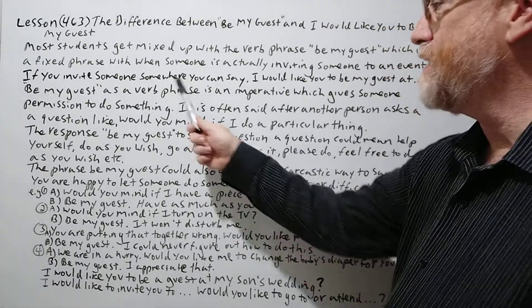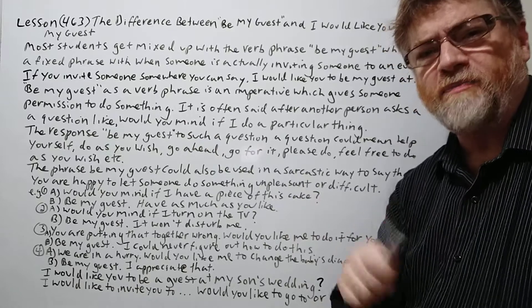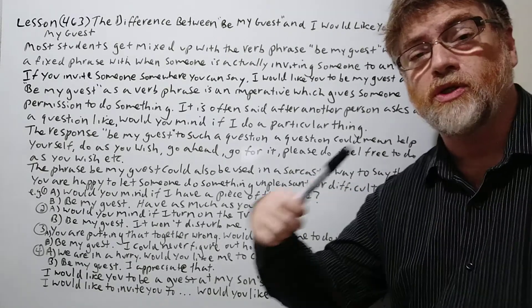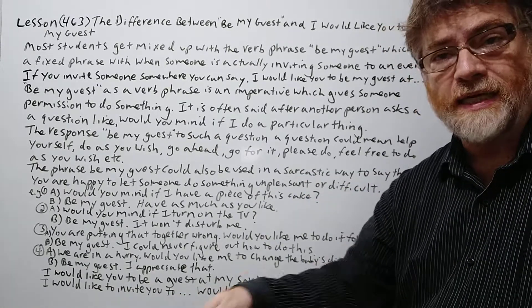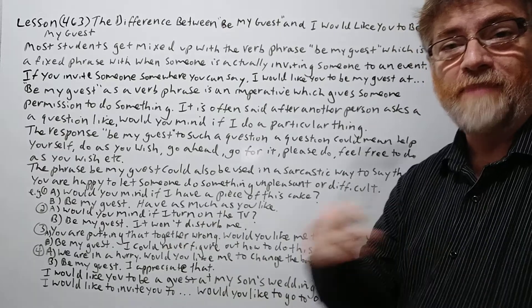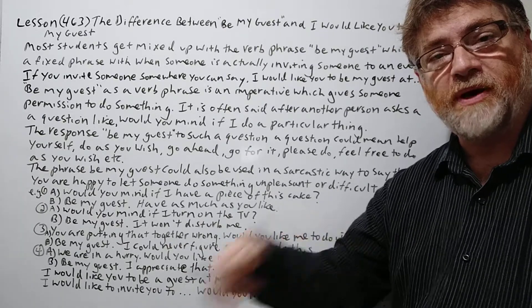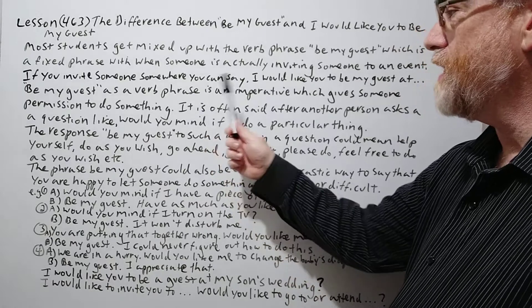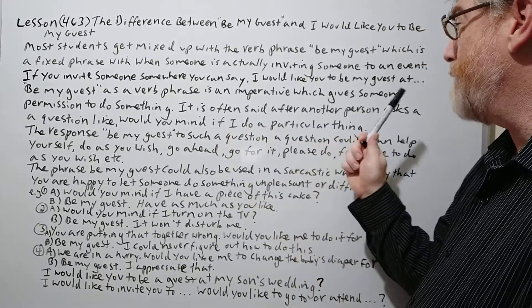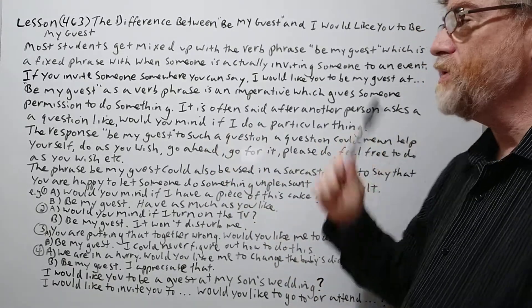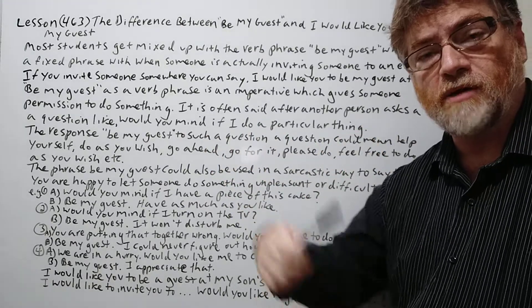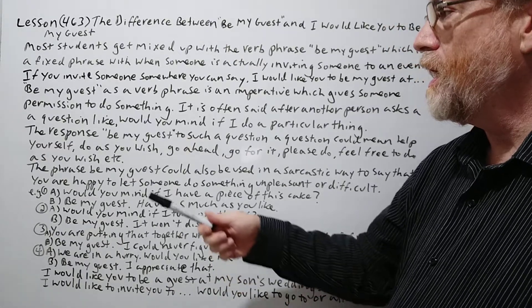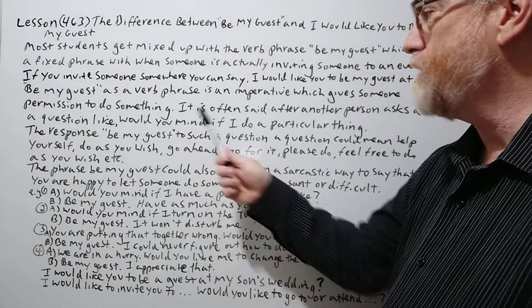'Be my guest' as a verb phrase is an imperative. An imperative is kind of like an order — like when you tell somebody 'just do it,' 'eat it,' 'buy it.' So 'be my guest' as a verb phrase is an imperative which gives someone permission — to allow someone to do something.